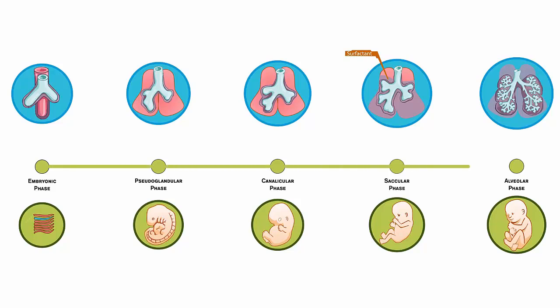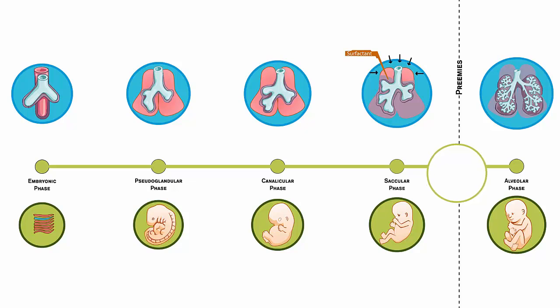Lung development is an extremely critical part of a baby's development prior to exiting the womb, which is why for preemies it is challenging when they arrive early. Often preemies do not have a sufficient amount of surfactant, which is essential to breathing, and they require the support of ventilation when they arrive and are placed in an incubator until their lungs further evolve.